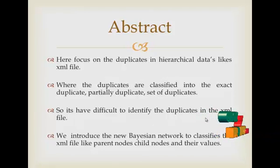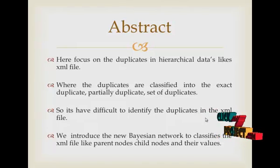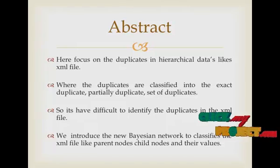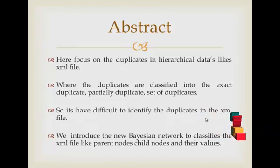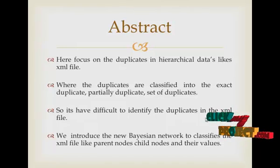The focus is on duplicates in hierarchical data linked XML files, where duplicates are classified as exact duplicates, partial duplicates, and set of duplicates. In this process we apply a probability condition to get all the information from XML data, getting all duplicates in parent node and child node. Four conditions are applied for our method, as it is difficult to identify duplicates in the XML file.